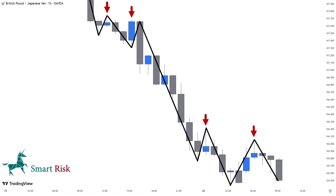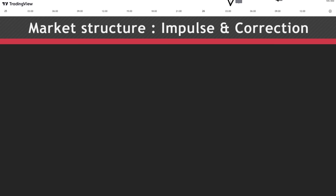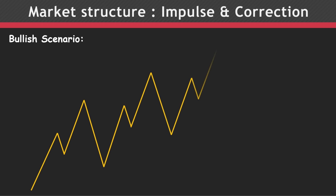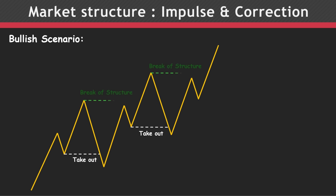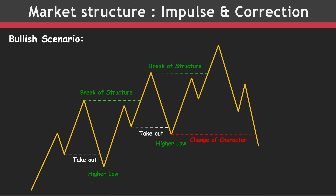Now that we discussed pullbacks in terms of candlestick form, let me explain impulsive and corrective moves in terms of market structure. In the case of an uptrend, an impulsive move refers to a strong bullish movement indicating heavy bullish momentum. On the contrary, a correction refers to a temporary market retracement or reversal that takes out a pullback. A break of structure occurs when the price breaks above a market structure level after a corrective move, defining our recent high or low, showing that the market intends to continue in the same bullish direction. A change of character occurs when the price breaks below the lowest point of a corrective move, indicating a loss in momentum — an early signal that we are no longer in an uptrend and might witness a reversal.